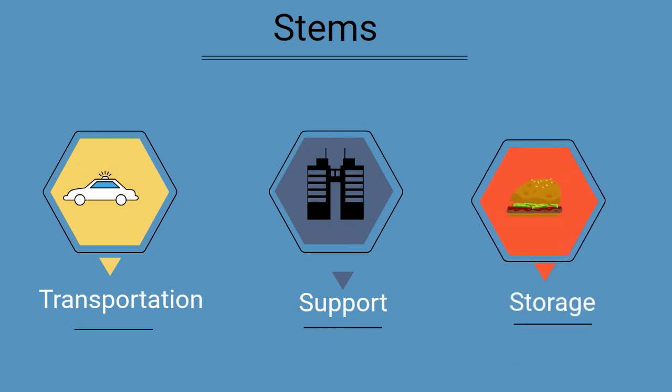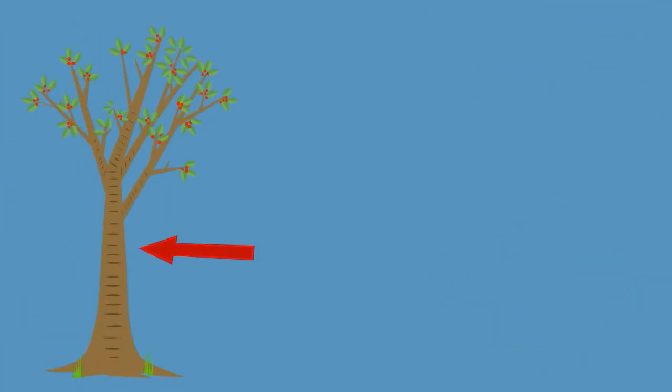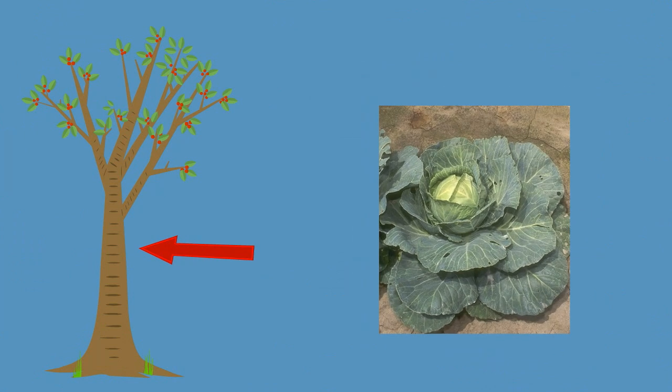Stems come in various shapes and sizes. Some of the stems like those of trees are very prominent. Other stems like those of cabbage are short and hidden.